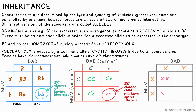Human DNA contains 23 pairs of chromosomes, but only one pair determines sex. If you have XX chromosomes, you're female. If you have XY chromosomes, you're male. The expression of these genes affects every cell in your body and every aspect of your physiology. We can also make a Punnett square to show this — as you can see, there's a 50-50 chance of a child being male or female.